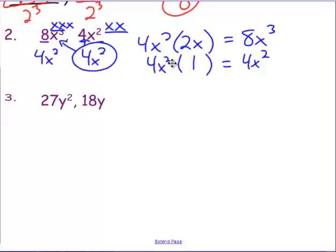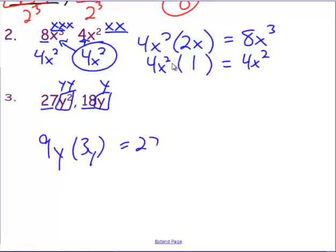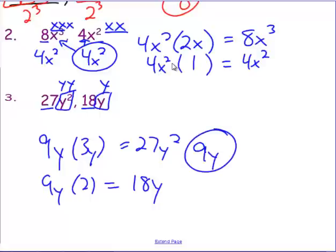Last example: I have 27y² and 18y. I'm looking for the greatest common factor of 27 and 18, which is 9. Then I look at the variables: 18y has one y, 27y² has two y's — they each share one y. So 9y is the greatest common factor. 9y times 3y gives me 27y², and 9y times 2 gives me 18y.